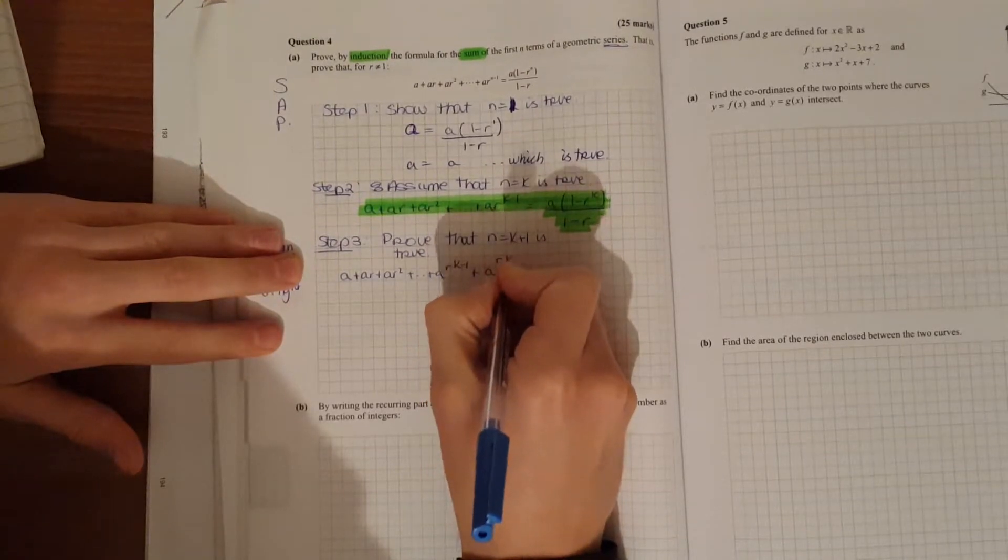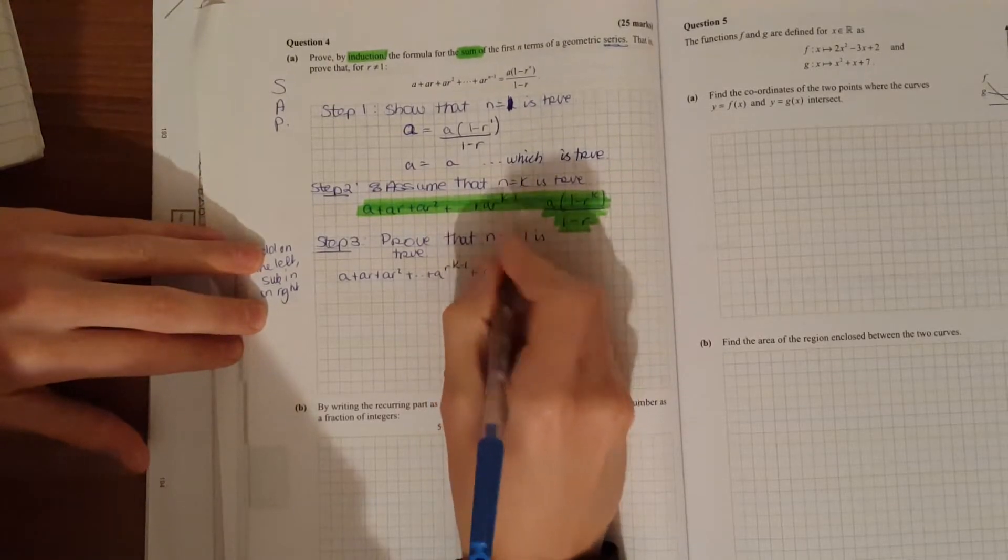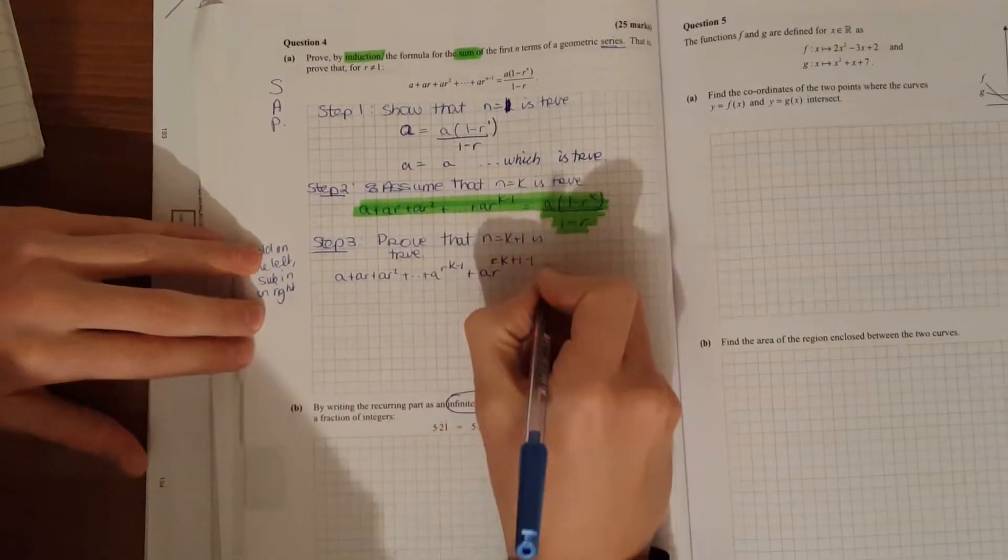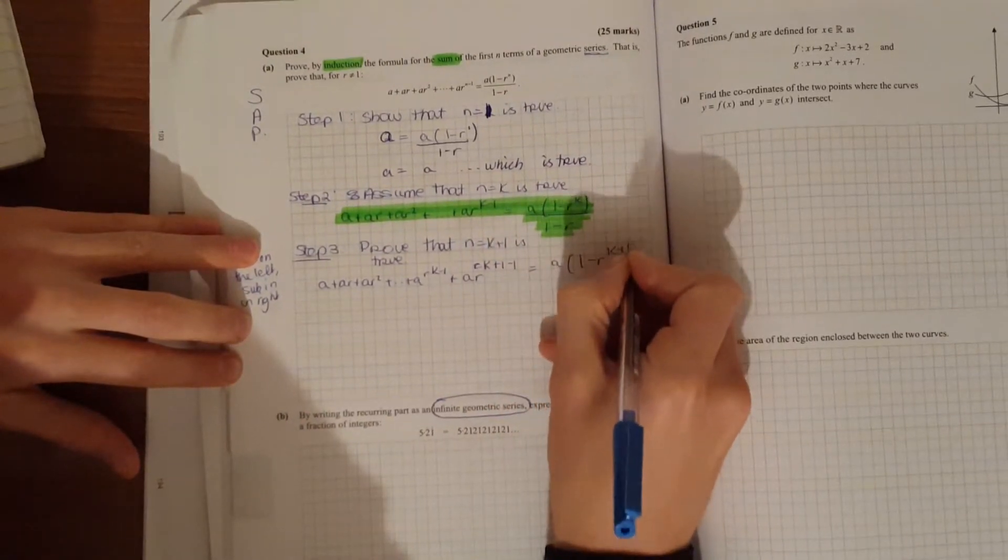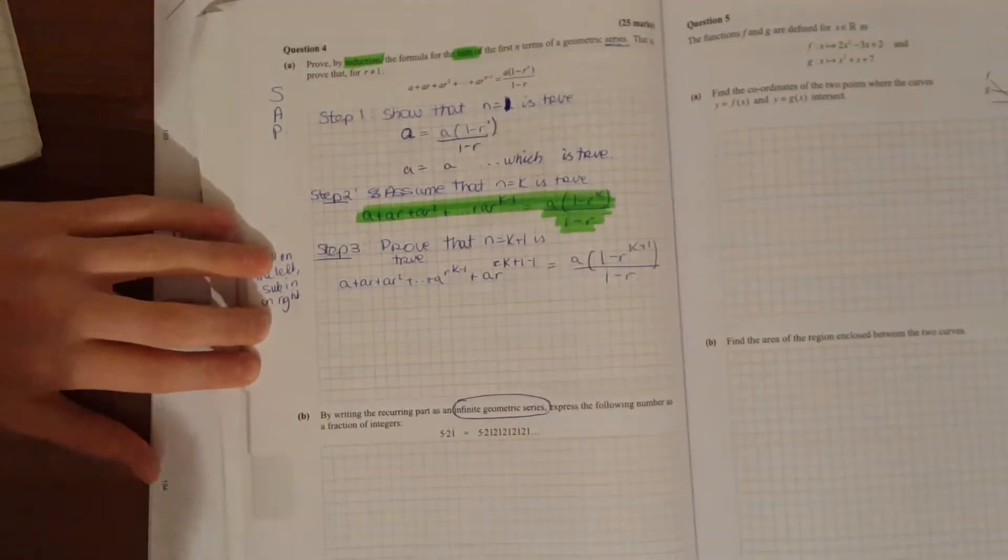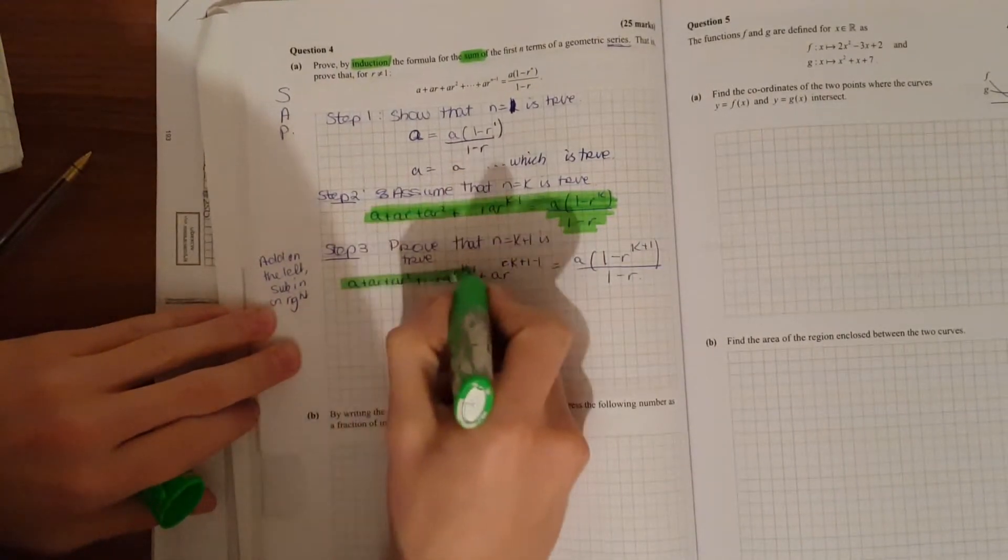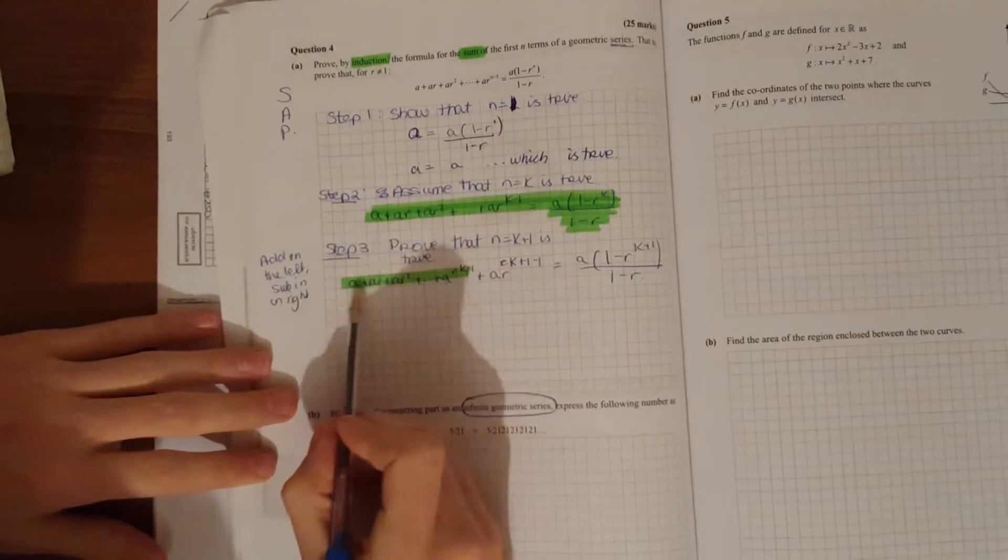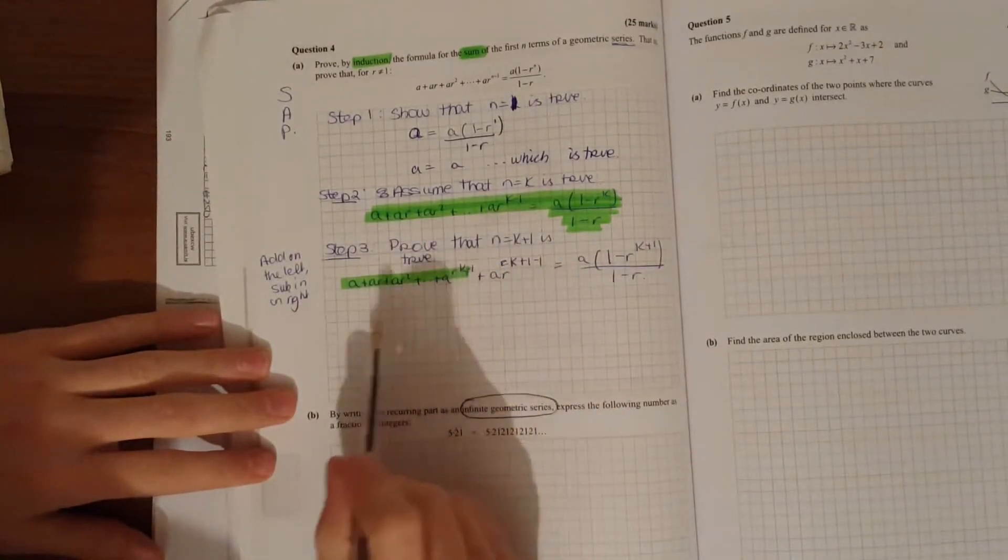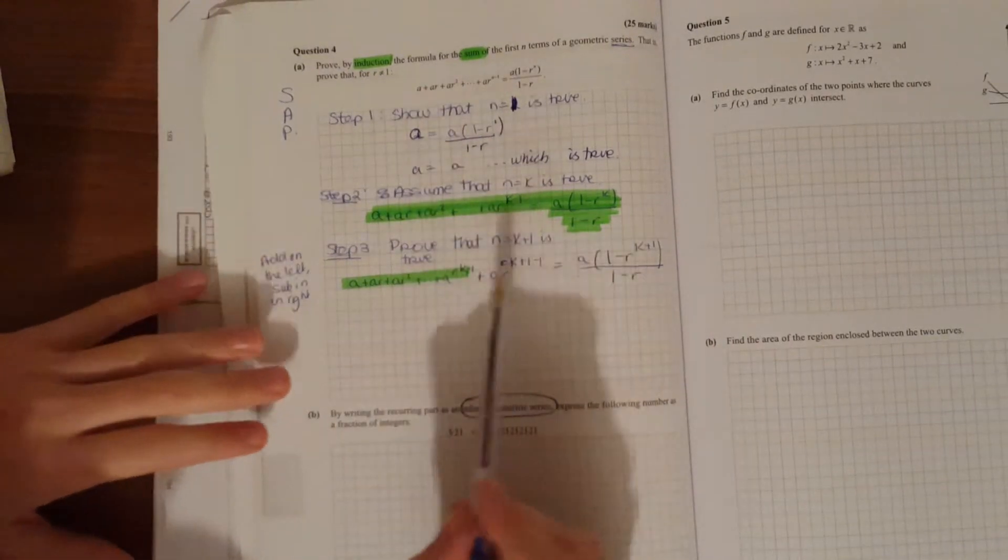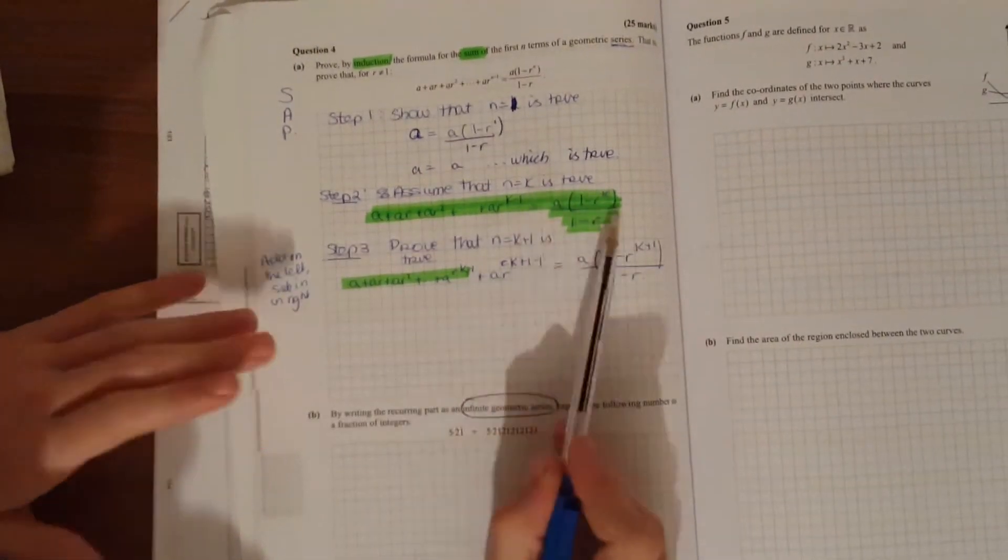And then sub it in on the right: A times R to the K plus 1. And plus 1, then your minus 1, whatever was already there. Now from this, we can see that we have our assumption hidden away there. The first four terms written down, all the way up to A times R to the K minus 1, is our assumption. Now we know what that's worth from our assumption. So instead of saying this here, we're going to replace it with this here, because they're equals. They're both the same.